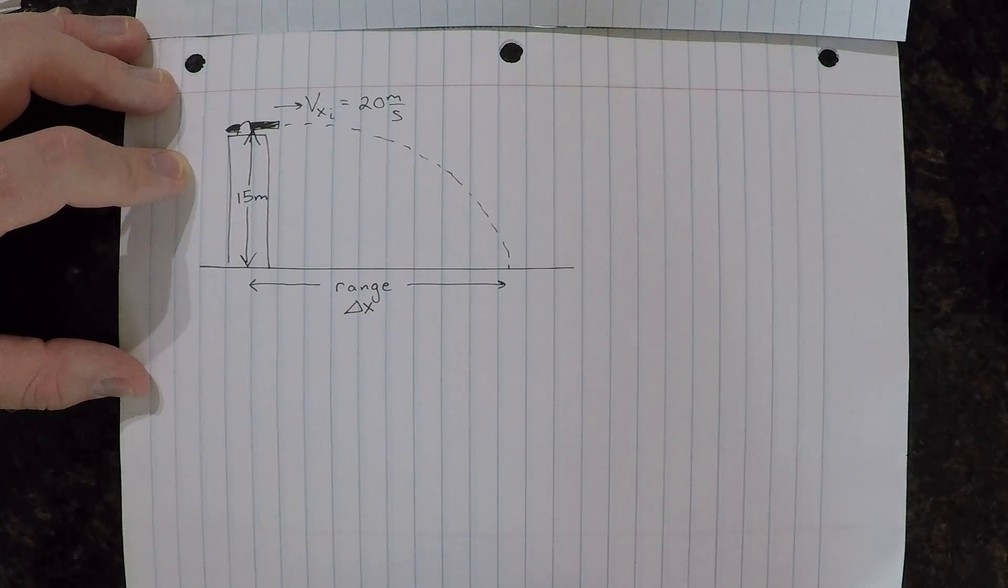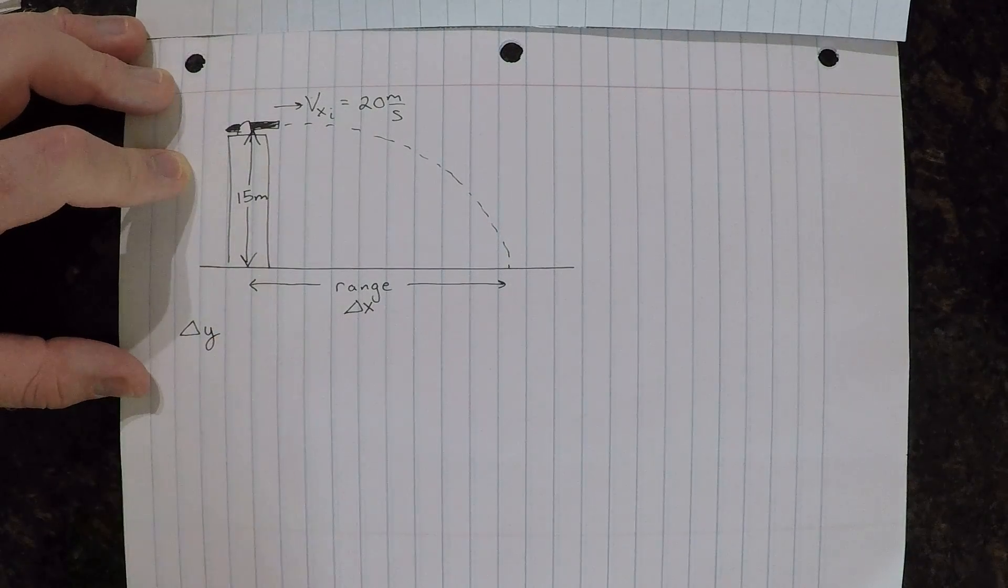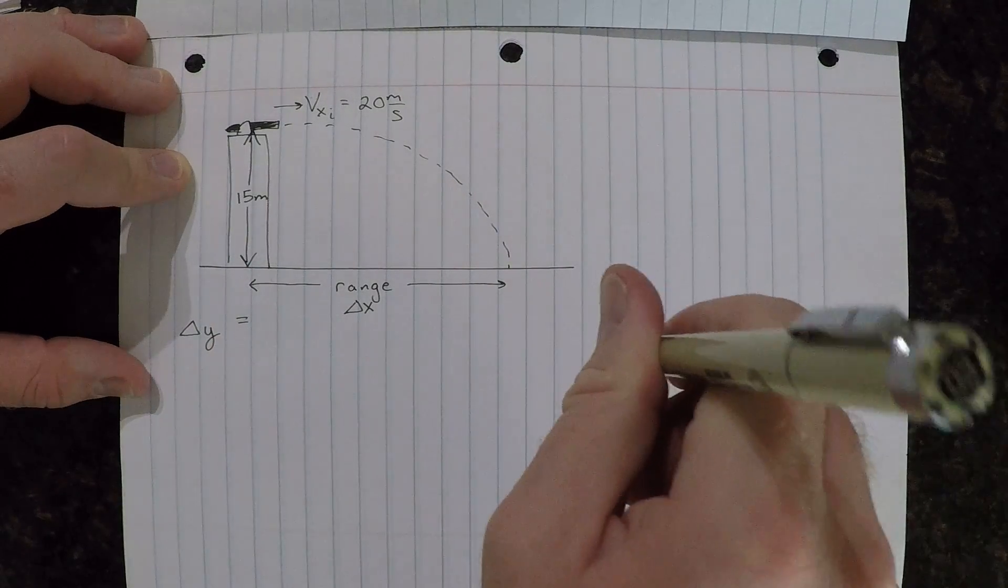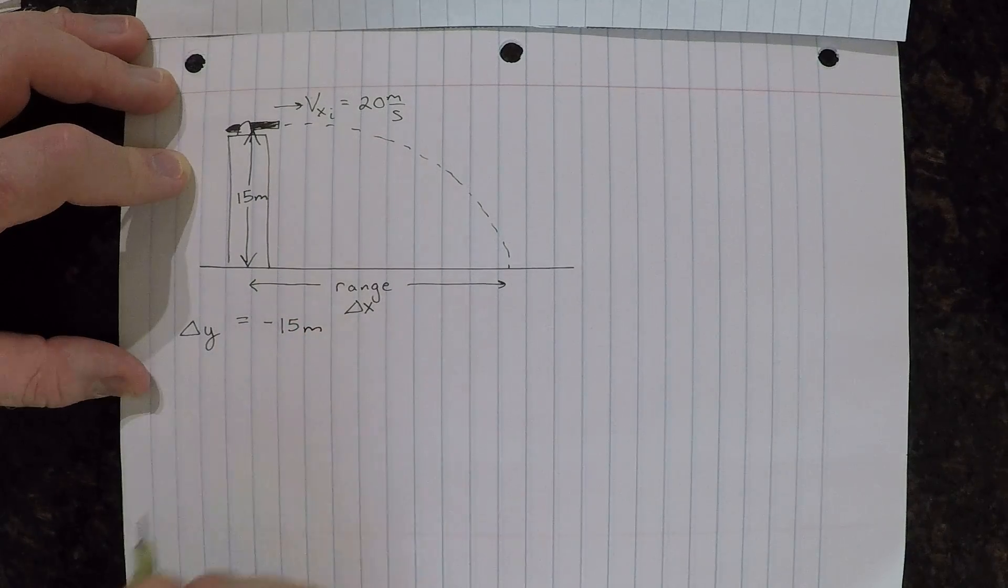Let's write down everything that we know. Well we know that our displacement in the y-direction, or vertical, is going to be equal to 15 meters down, so that's going to be negative. We'll just choose downward to be negative, 15 meters.